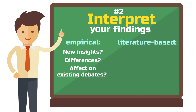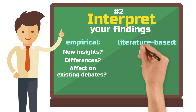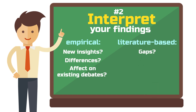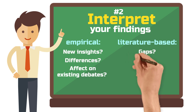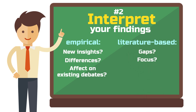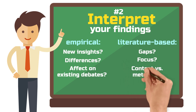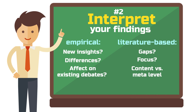For literature-based studies, you can ask yourself the following questions: Did your review reveal that certain niches within the field have not been covered? Or what does the research focus on and which aspects does it neglect? Discuss the contents of the literature you analyzed. Reflect on a meta-level on the themes, assumptions, gaps, or contradictions you have found and what it means in terms of answering the research question or questions.